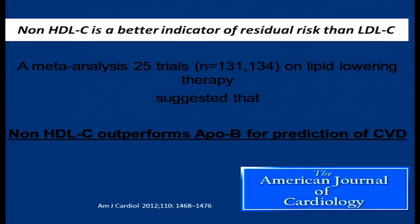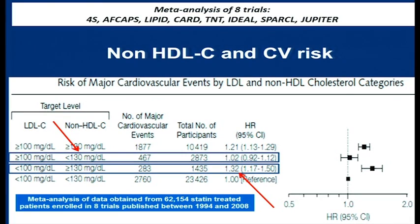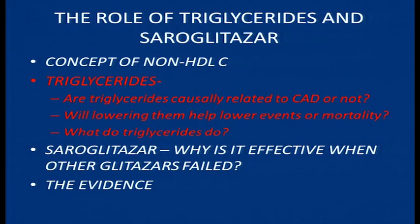There are indicators which say that non-HDL is perhaps a better indicator of risk than LDL cholesterol. A meta-analysis of over 130,000 patients in the American Journal of Cardiology showed that non-HDL outperforms ApoB, which was touted to be the best indicator in Salim Yusuf's study. It has also been seen that if you lower LDL cholesterol to less than 100 but non-HDL cholesterol continues to be high, it is riskier than actually reducing non-HDL while LDL remains high. The risk is 32% higher if LDL has been lowered but the non-HDL target has not been reached.